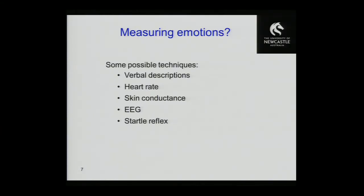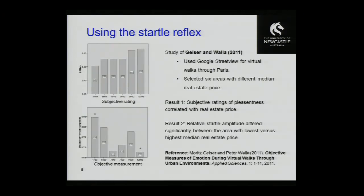There are many different definitions of emotions, and we already heard about several techniques for measuring them — through verbal descriptions, skin conductance products, EEG, and the startle reflex. A recent study by my co-authors Kaiser and Waller used the startle reflex — specifically the eye blink component. You hear a clap sound, then you blink, and you can measure the change in muscular activity.